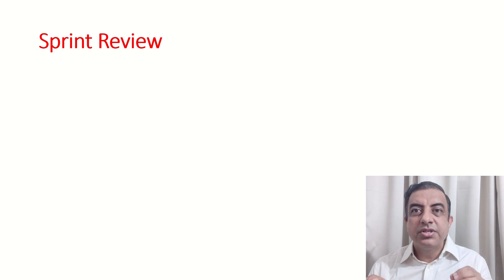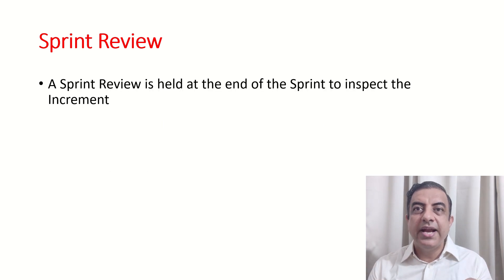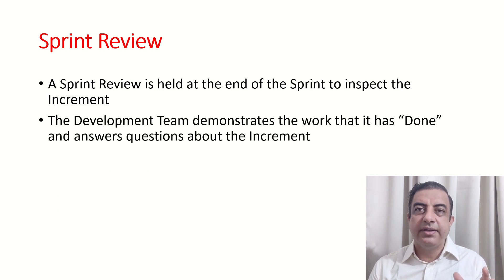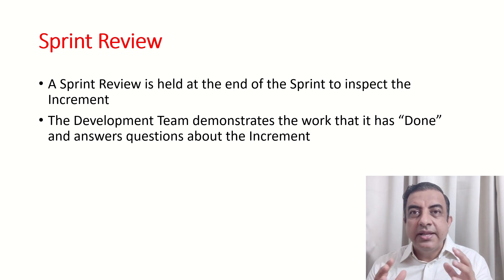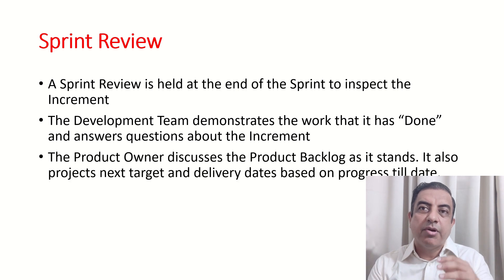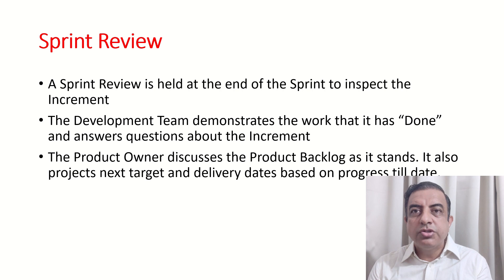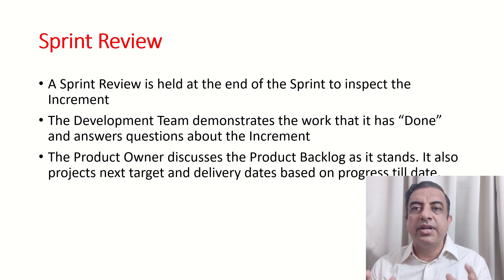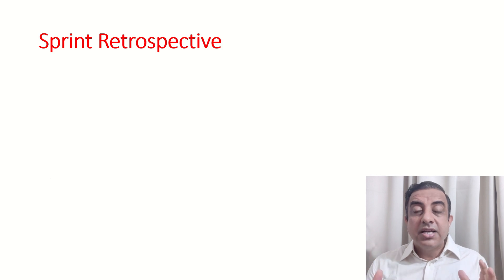The next most critical activity is Sprint Review. A Sprint Review is held at the end of the sprint to inspect the increment. The development team demonstrates the work that has been done and answers questions about the increment. The product owner also discusses the product backlog as it stands, and projects the next target and delivery dates based on progress to date.